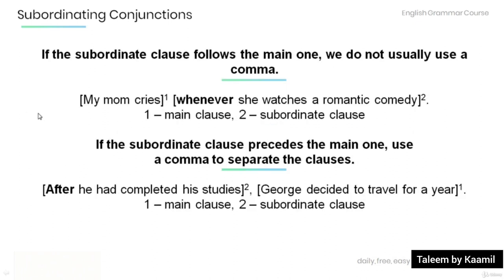Now if the subordinate clause follows the main one, we do not usually use a comma. As in the example over here: 'My mom cries' — main clause — 'whenever she watches a romantic comedy' — subordinate clause. Note that a comma is not used in this sentence because the subordinate clause follows the main one.